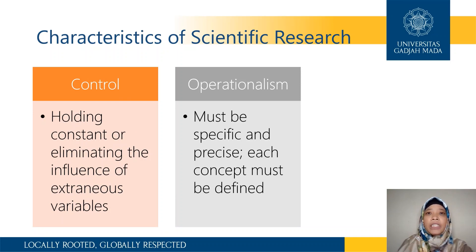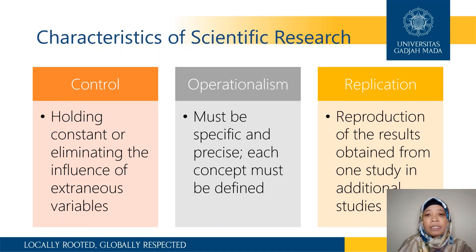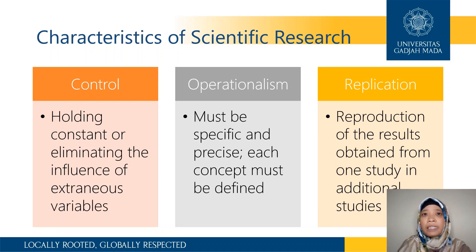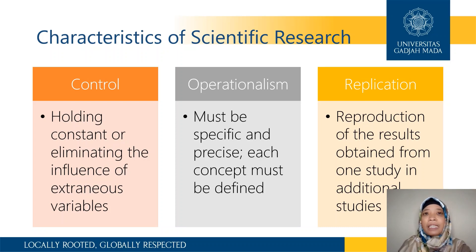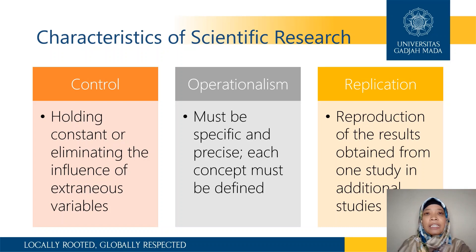The third characteristic of scientific research is replication — the reproduction of results obtained from one study in additional studies. Some people replicate a study in another setting, with another sample and another population. What we want from replication is to get the same or at least similar results in different settings or with different populations following the same exact procedures. That is the ideal result of replication.